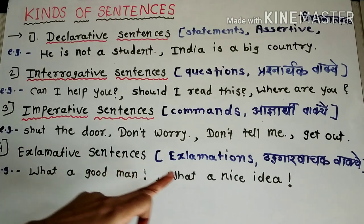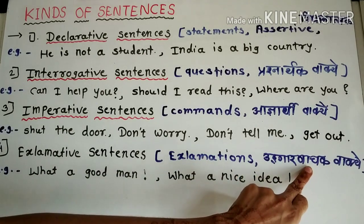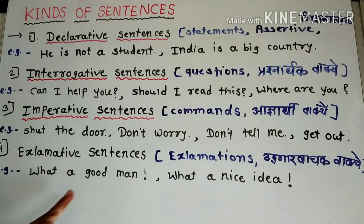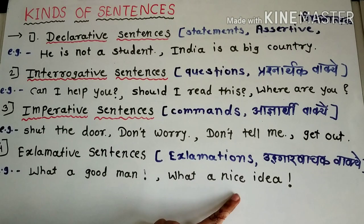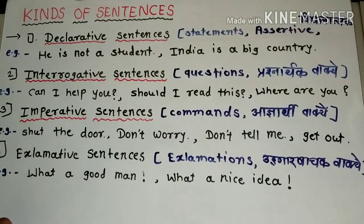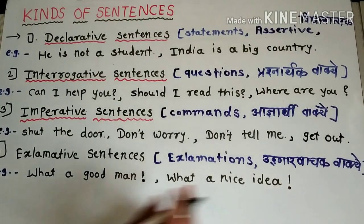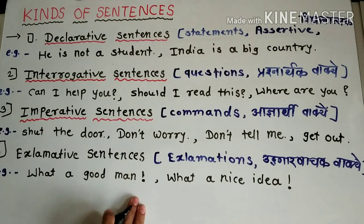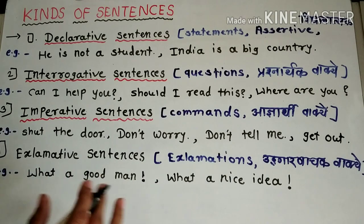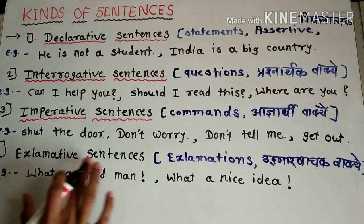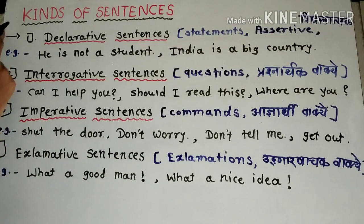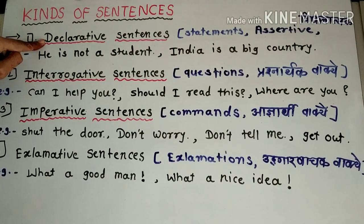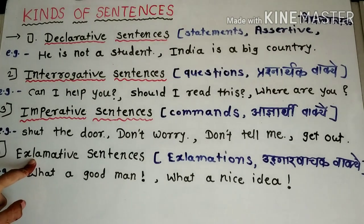The fourth type is exclamative sentences — also called exclamatory sentences — meaning 'udgarvachak vakye.' These express strong feelings like joy, sorrow, or surprise. For example: 'What a good man!' meaning 'What a great person!' and 'What a nice idea!' meaning 'What a wonderful idea!' When we express feelings strongly through a sentence, those are exclamatory sentences.